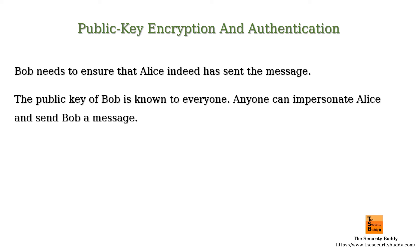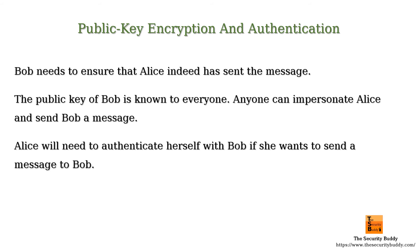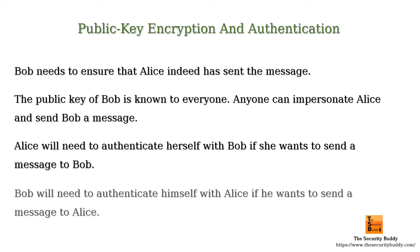In order to ensure Bob that Alice indeed has sent the message, Alice would need to authenticate herself with Bob. Similarly, if Bob wants to send an encrypted message to Alice and Alice wants to ensure that no one other than Bob has indeed sent the message, then Bob would need to authenticate himself with Alice. So how can public key encryption be used to authenticate Alice and Bob to each other?